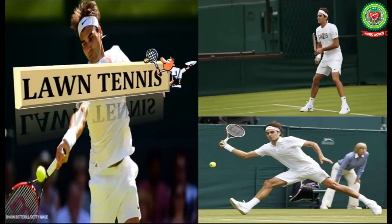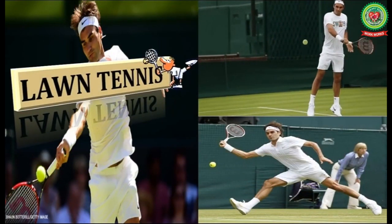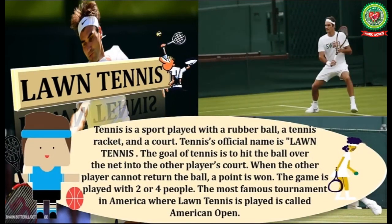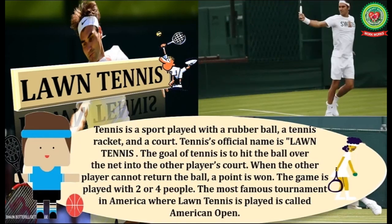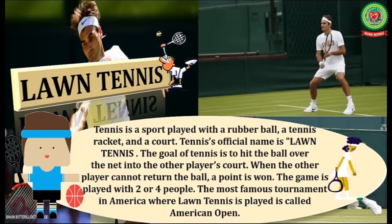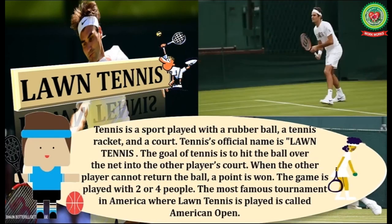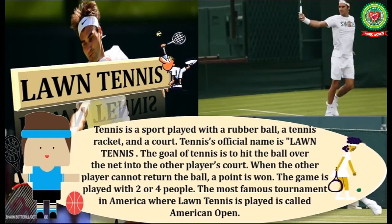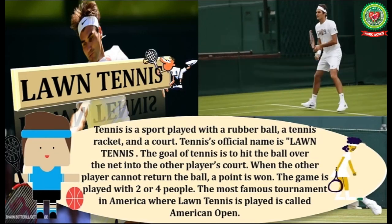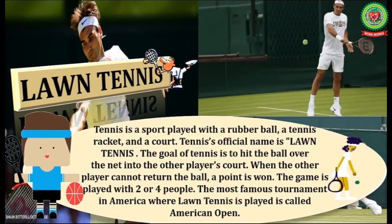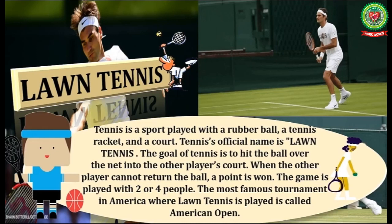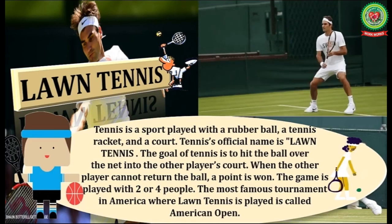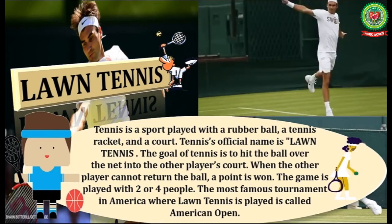And the last one is lawn tennis. Tennis is a sport played with a rubber ball, a tennis racket, and a court. Tennis' official name is lawn tennis. The goal of tennis is to hit the ball over the net into the other player's court; when the other player cannot return the ball, a point is won. The game is played with two or four people. The most famous tournament in America where lawn tennis is played is called the American Open.